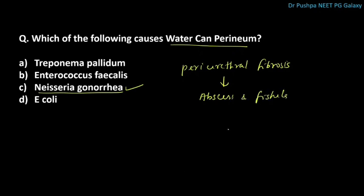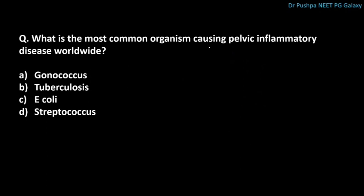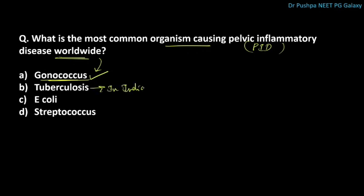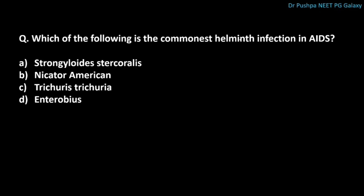What is the most common organism causing pelvic inflammatory disease worldwide? The correct answer is Gonococcus. The most common organism in India is TB. Which is the commonest helminth infection in AIDS? The correct answer is Strongyloides stercoralis.